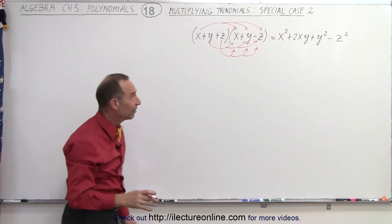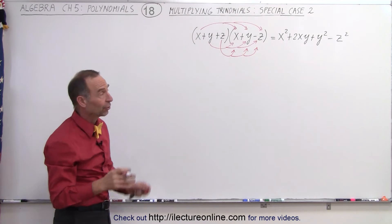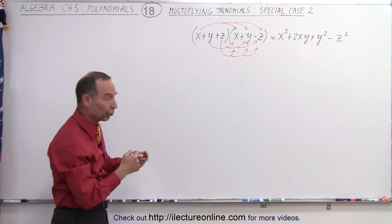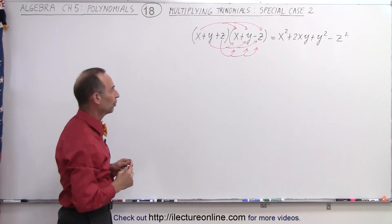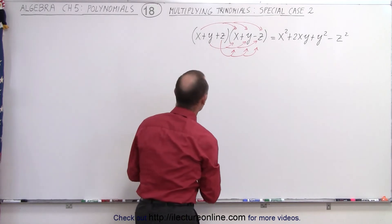Notice nine arrows means nine terms, but somehow those nine terms collapse down to just four terms in the final solution. Let's go ahead and work this out.